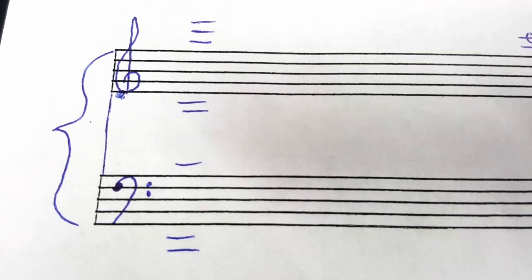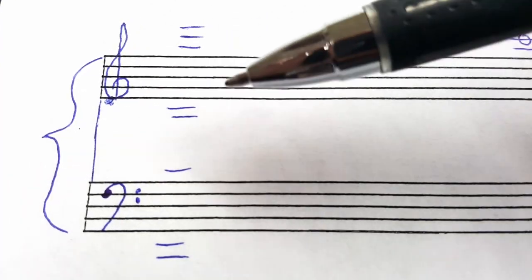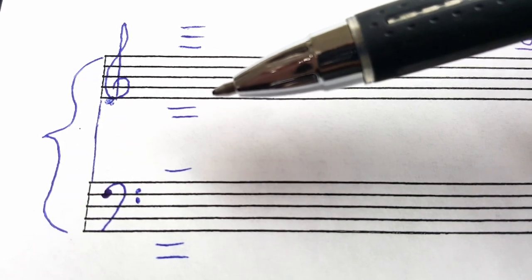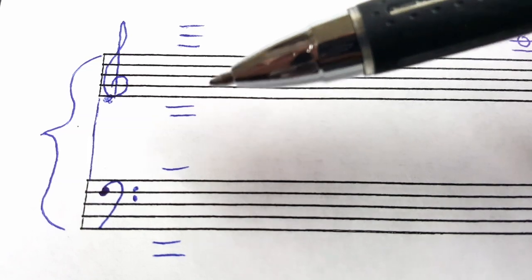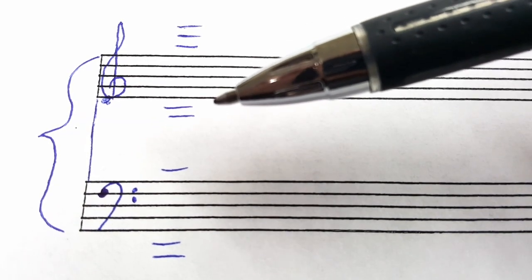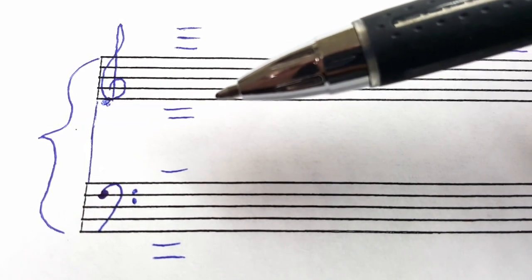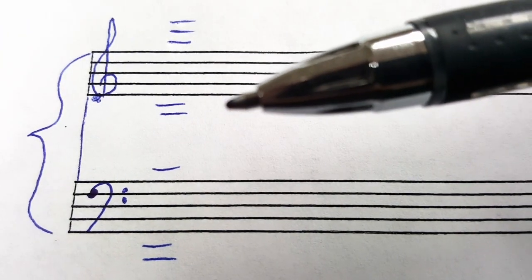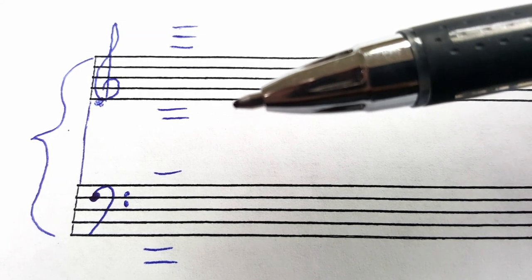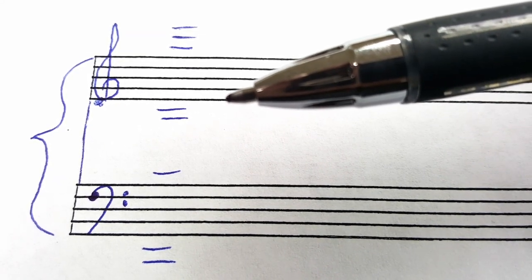You notice that if we were to start at the first line of treble clef and go line, space, line, space, line, space, that they go up alphabetically. And to review, there are seven letters in the musical alphabet: A, B, C, D, E, F, G, and after G you go back to A.